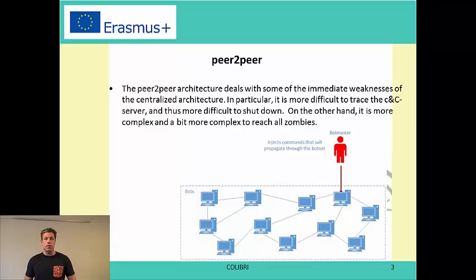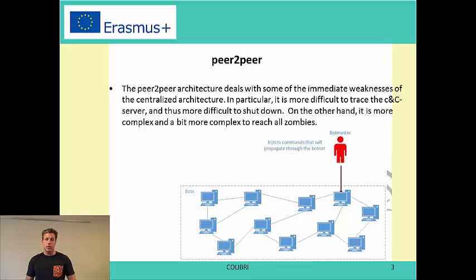You can do it more advanced by making it peer-to-peer. In this case you have a lot of bots which are all equal. The bot master simply injects a command into one of them, and then through the routing mechanism in the botnet the information reaches all the bots eventually.